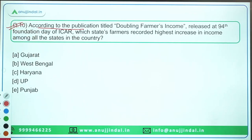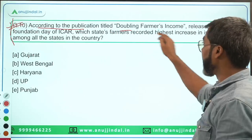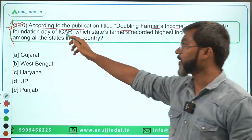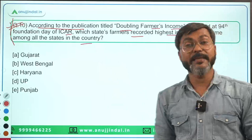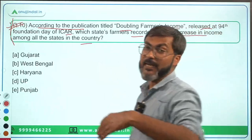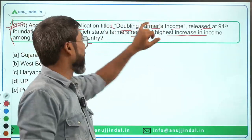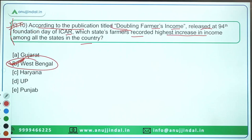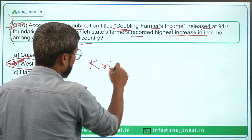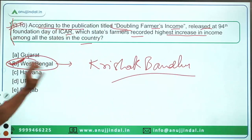The last question: according to the publication titled 'Doubling Farmers' Income', released at the 94th Foundation Day of ICAR, which state's farmers recorded the highest increase in income among all states in the country? The answer is West Bengal — option B is the correct answer. This is due to a scheme being implemented by the Government of West Bengal called the Krishak Bandhu scheme.